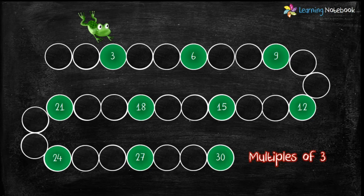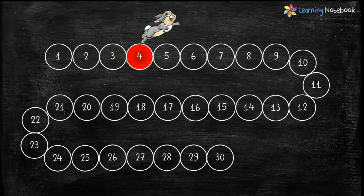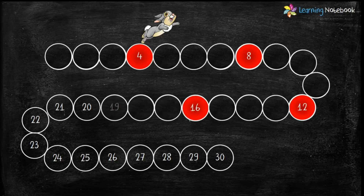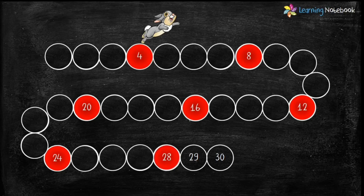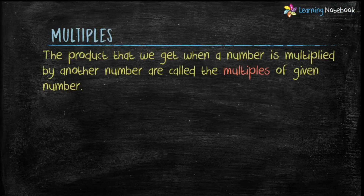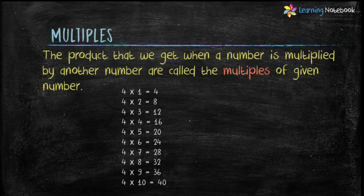Students, note that all these numbers in green are multiples of three. Now let's see on which numbers the rabbit will jump. The rabbit will first jump on 4, then on 8, then again take four steps and jump on 12. In the same way the rabbit will jump on 16, 20, 24, and 28. Note that all these numbers in red are multiples of four.